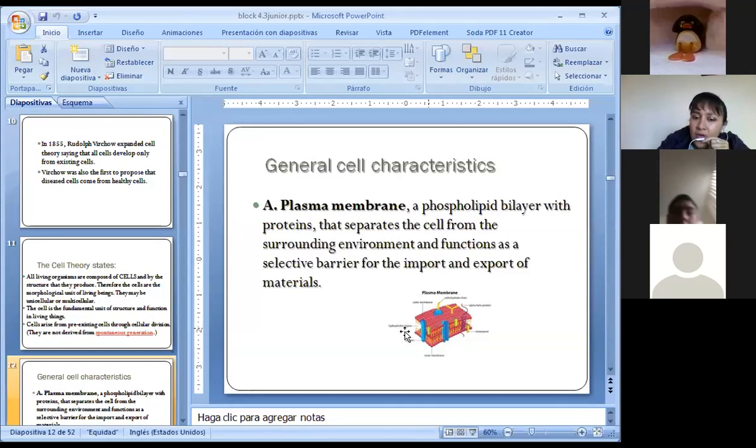What does this membrane do? This separates the cell from the environment. And one of the functions is a selective barrier for the import and export of materials. Meaning, nothing can come into the cell or go out of the cell without passing through the cell membrane.